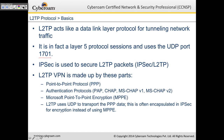An L2TP VPN is made up of three parts: a point-to-point protocol (PPP), authentication protocols — which can be PAP, CHAP, MS-CHAP version 1 and version 2 — and it also uses MPPE. L2TP uses UDP to transport the PPP data, often encapsulated in IPSec for encryption instead of MPPE.